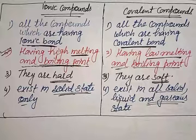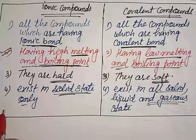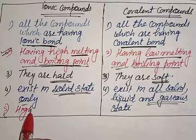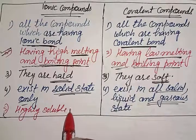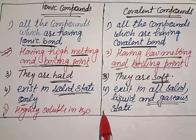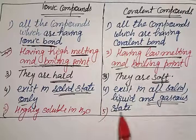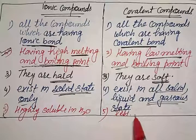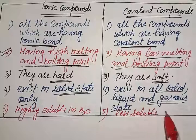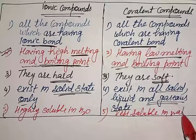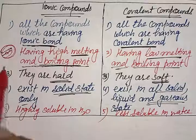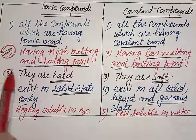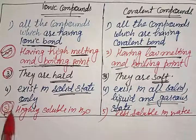Ionic compounds are highly soluble in water, while covalent compounds are less soluble or insoluble in water. So the three key properties to remember for reasoning questions are: high melting point, hardness or softness, and solubility in water.